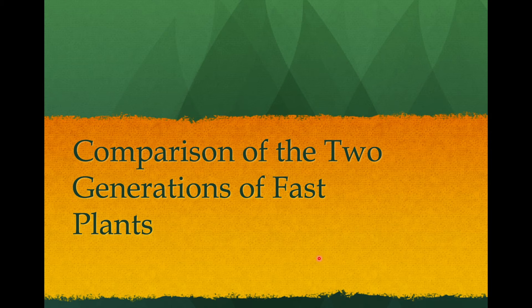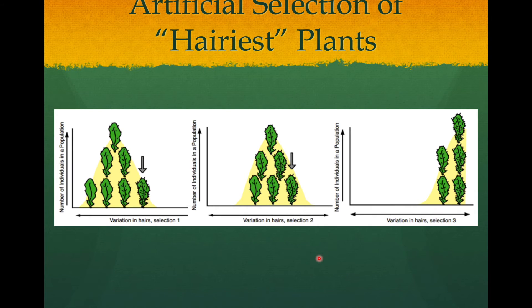So what we need to do in order to answer our question, did evolution occur, is to compare the two generations of these fast plants. Showing you in a visual format, we had these plants that followed a distribution curve, and we selected for the hairiest plants. For this particular experiment, this middle graph is showing generation two.